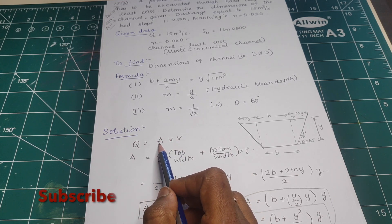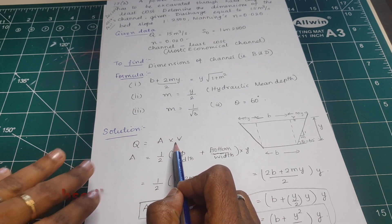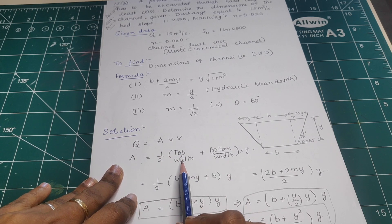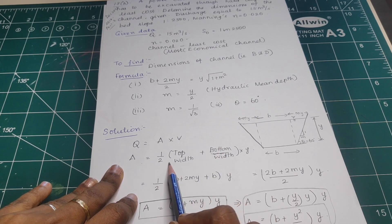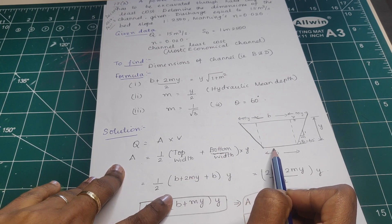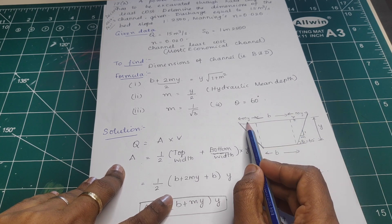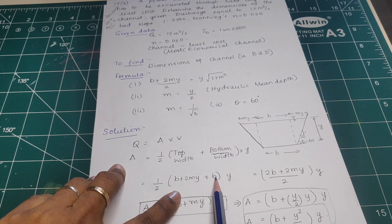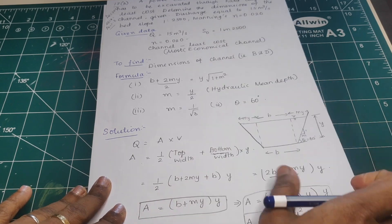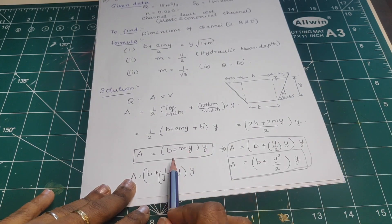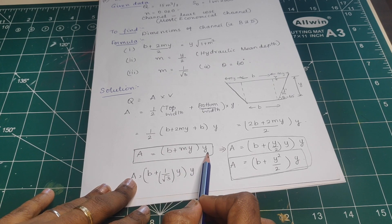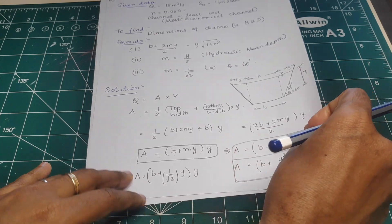The formula is: discharge equals area into velocity. The area of the trapezoidal section is: top width plus bottom width divided by 2, into depth. Top width is b plus 2my, bottom width is b, so area A equals (b + my) × y.